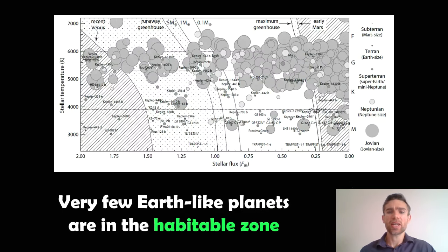So this is a fairly complex-looking plot of habitable planets. What you've got here on the y-axis, you've got stellar temperatures. That's the temperature of the star. The hotter they are, obviously, the higher up they are. You've then also got the actual stellar flux.